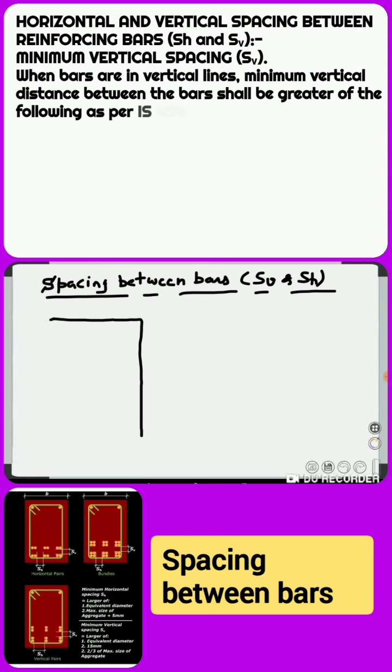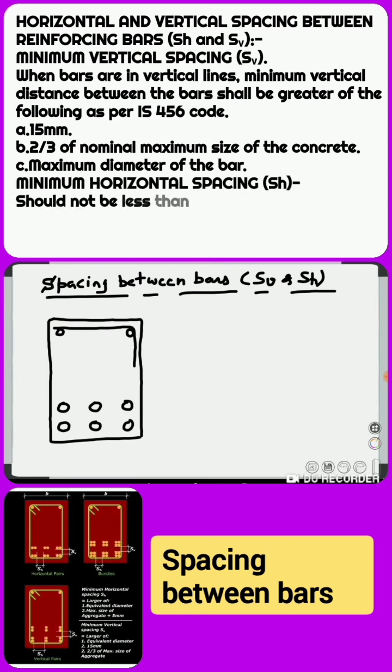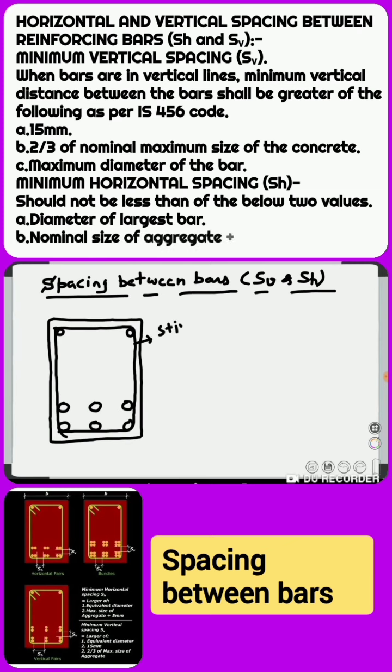Horizontal and vertical spacing between reinforcing bars, Sh and Sv, minimum vertical spacing, represented by Sh and Sv respectively. First we take minimum vertical spacing, that is Sv. When bars are in vertical lines.